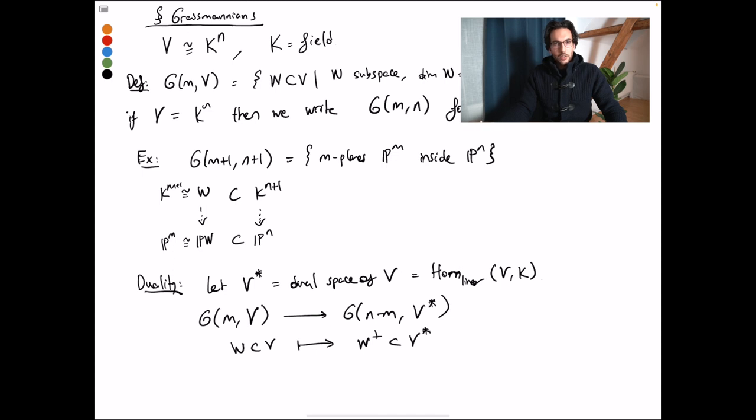And this is a duality because you can go back. So if I give you a subspace of dimension n minus m in V*, then its annihilator will live in V canonically, and that will be an m-dimensional space.